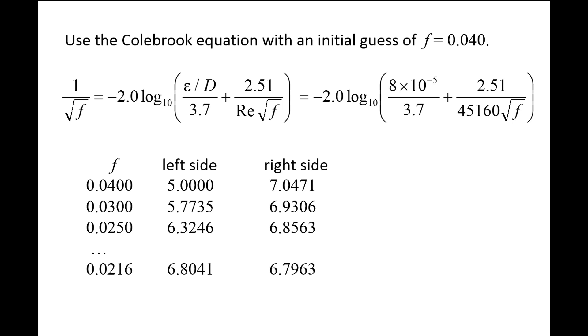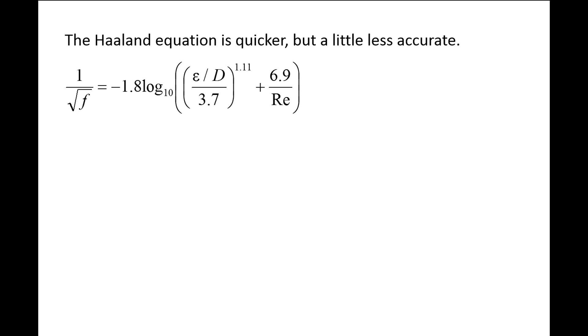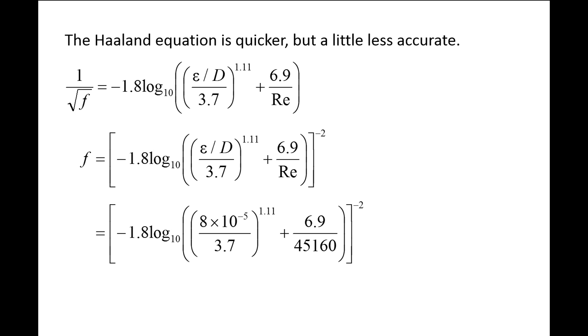For example, if we reduce the value of f to 0.0216, the left side and right side are almost equal and we are done. There is no point in finding more significant digits for f because the Colebrook equation is based on experiments that had limited accuracy. We also could have used the Halland equation to determine the friction factor much quicker. We solve for f by raising the entire equation to the negative 2 power. Plugging in the values for the relative roughness and Reynolds number, we obtain a friction factor of 0.0214. Although the Colebrook equation is more accurate, the result from the Halland equation differs by less than 1%. In practice, this small difference is usually negligible compared to other uncertainties in the problem, such as the uncertainty in the absolute roughness value and in the values of the minor loss coefficients.